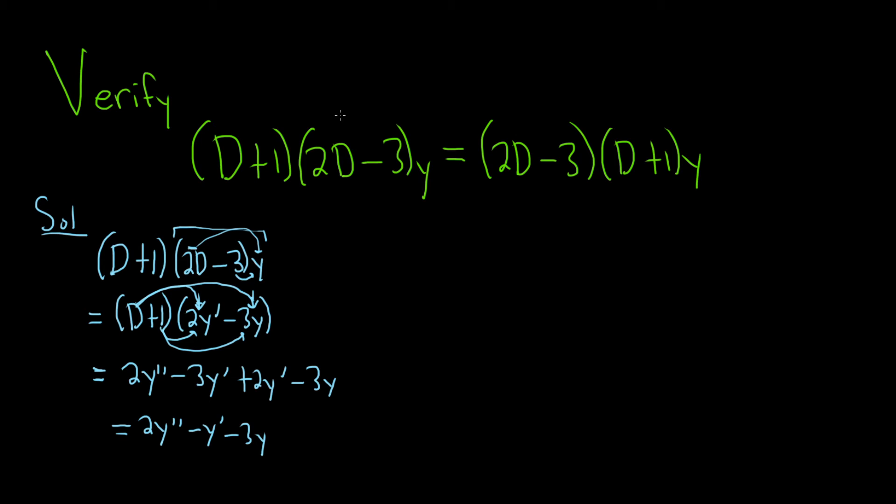Let's work out the right hand side. We have 2 big D minus 3, and then big D plus 1, and then we have y. Same thing, let's work from the right. So we have 2D minus 3. Applying big D to y gives us y prime, and 1 times y is just y.